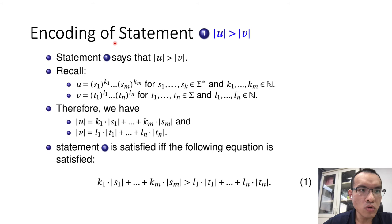So here we show how to encode statement 1: u is longer than v. Recall that after we restrict the solution space to the flat pattern, u is now in the form of S1 repeated k1 times until SM repeated km times. And the length of u is equivalent to k1 times the length of S1 plus km times the length of SM. Now statement 1 is satisfied if and only if the following equation holds: basically, the length of u is bigger than the length of v.